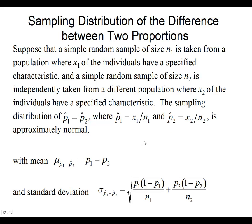So intuitively, we can figure out that the mean mu of P1 hat minus P2 hat should be P1 minus P2. The mean of the first proportion should be P1. The mean of the second proportion should be P2.